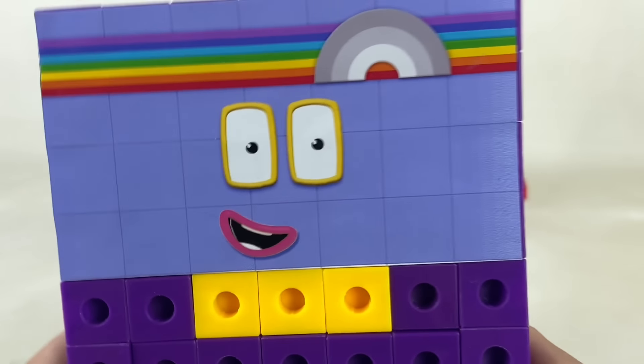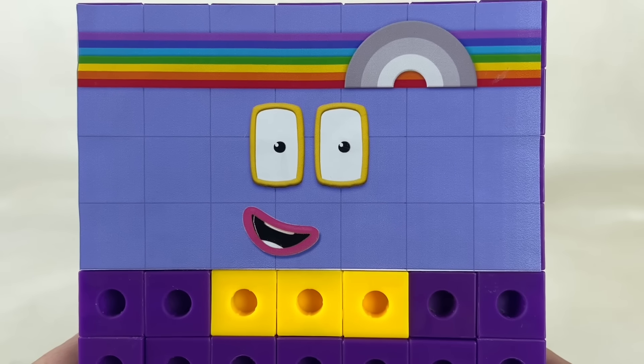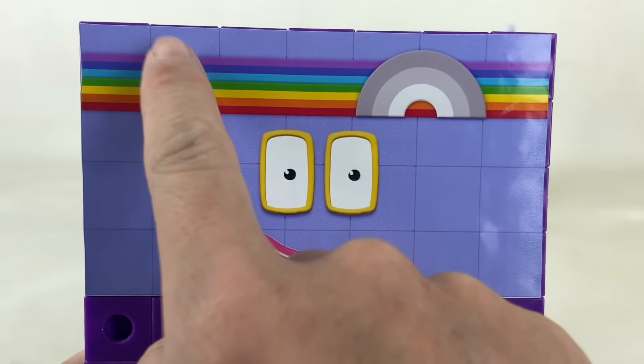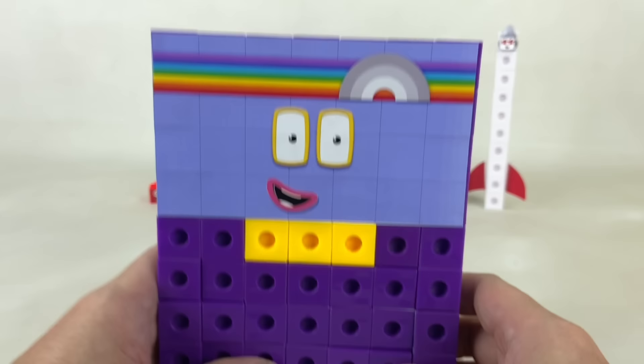He has yellow rectangle eyes, and a pink mouth with teeth similar to 4 or 40! He has a rainbow headband, with a gray rainbow on it to show that he is 7 times 9!